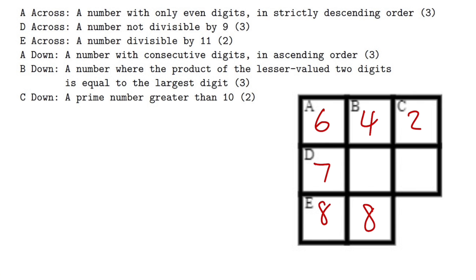Let's take a look at B down. It says B down is going to be a number where the product of the lesser valued two digits is equal to the largest digit. So that means we have 8 right here already, and that's the biggest possible digit we can have. In column B right here, this is 4, so that means we must have a 2 right here because 4 times 2 is equal to 8.